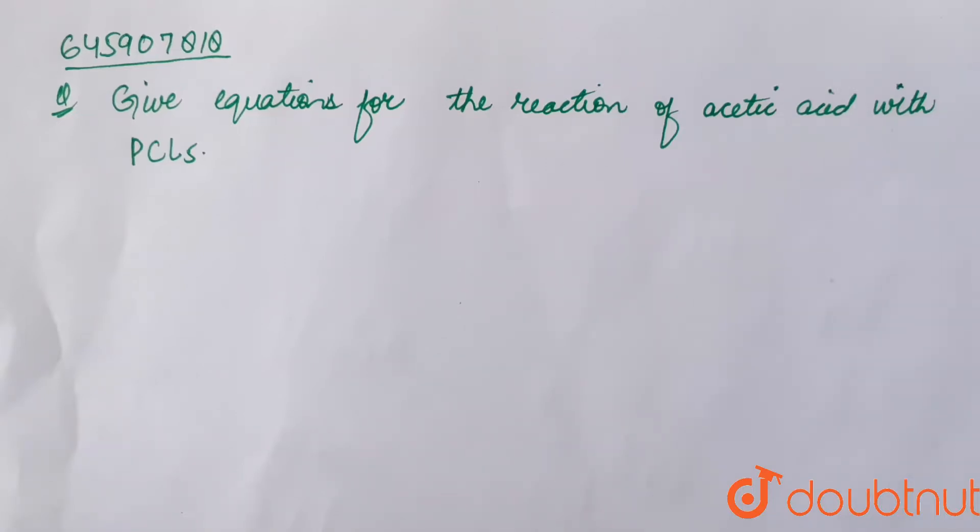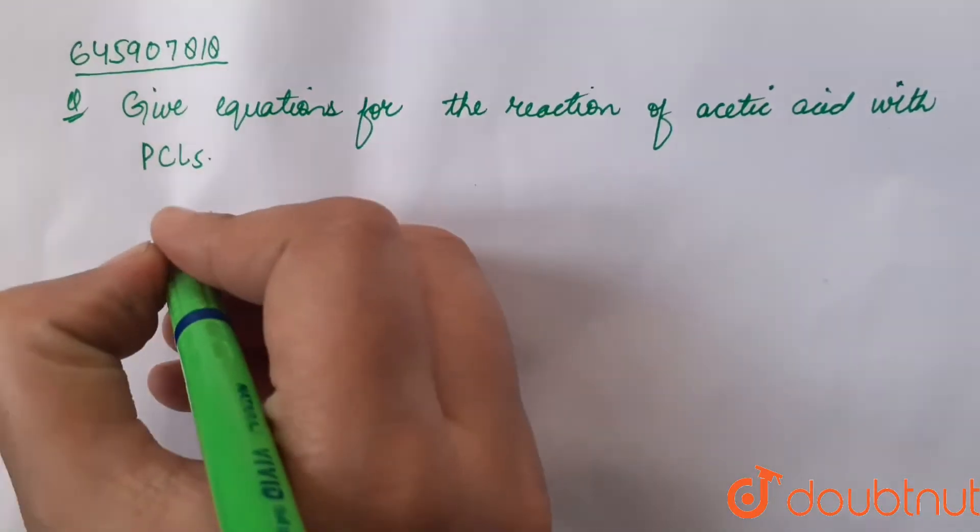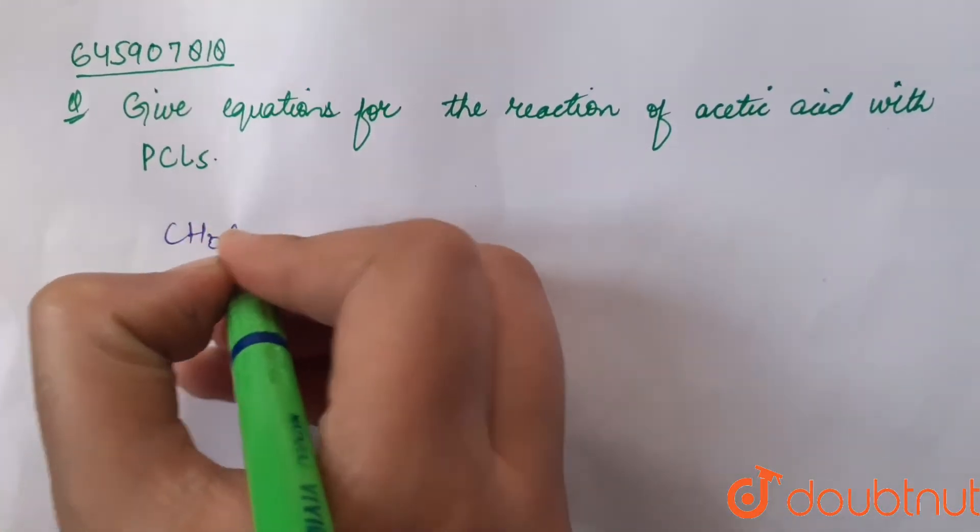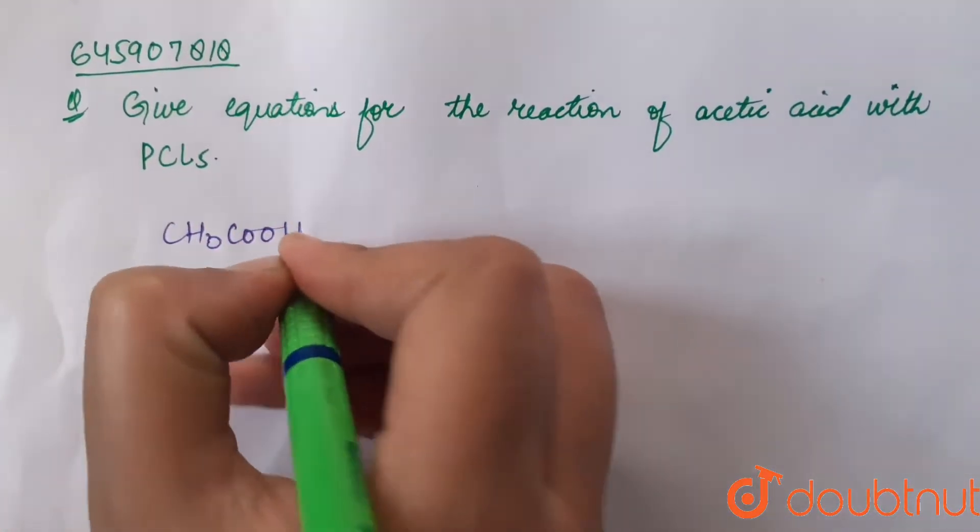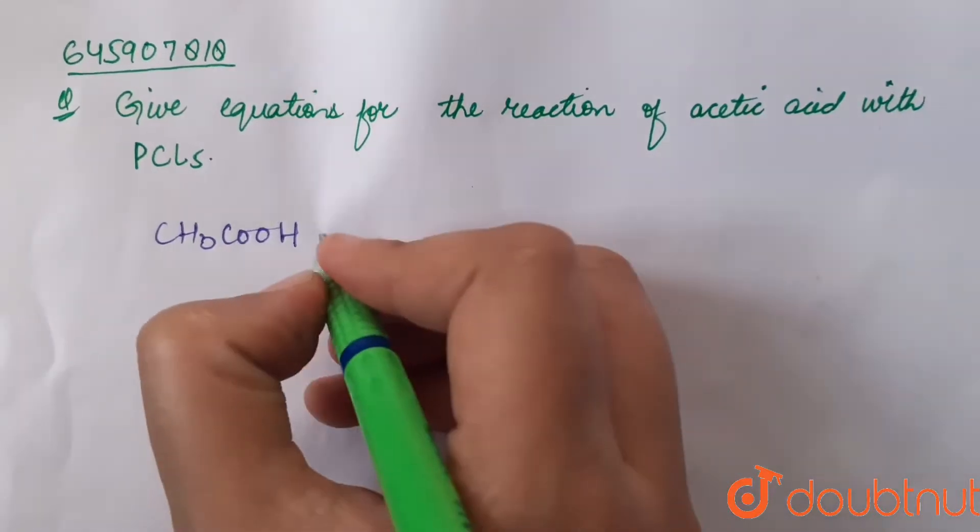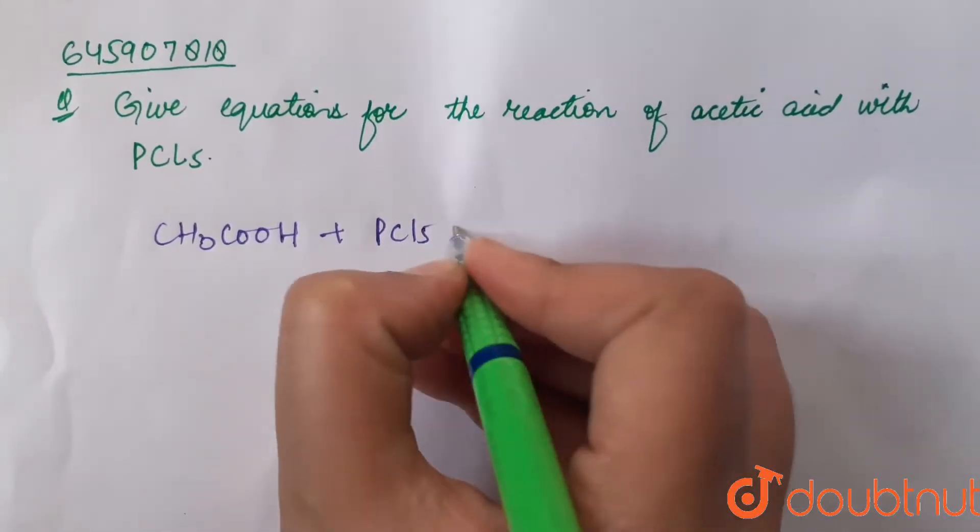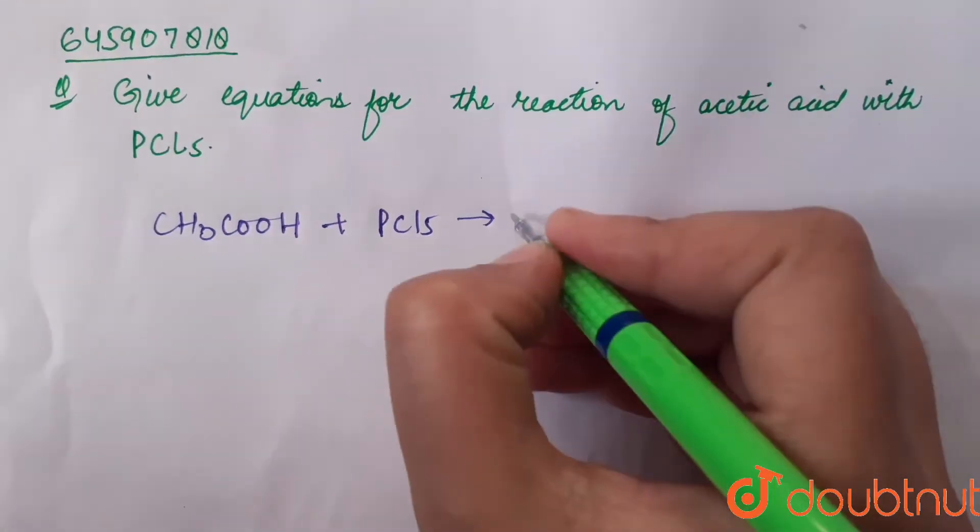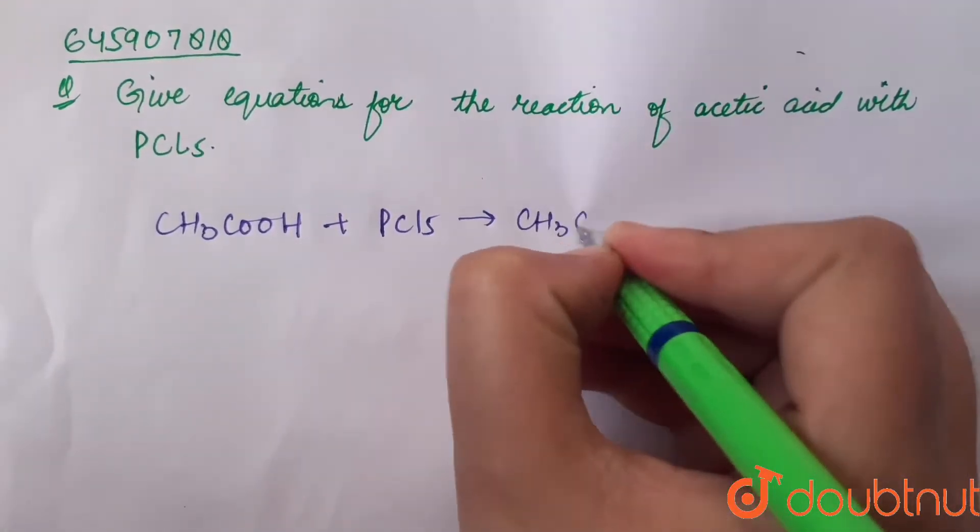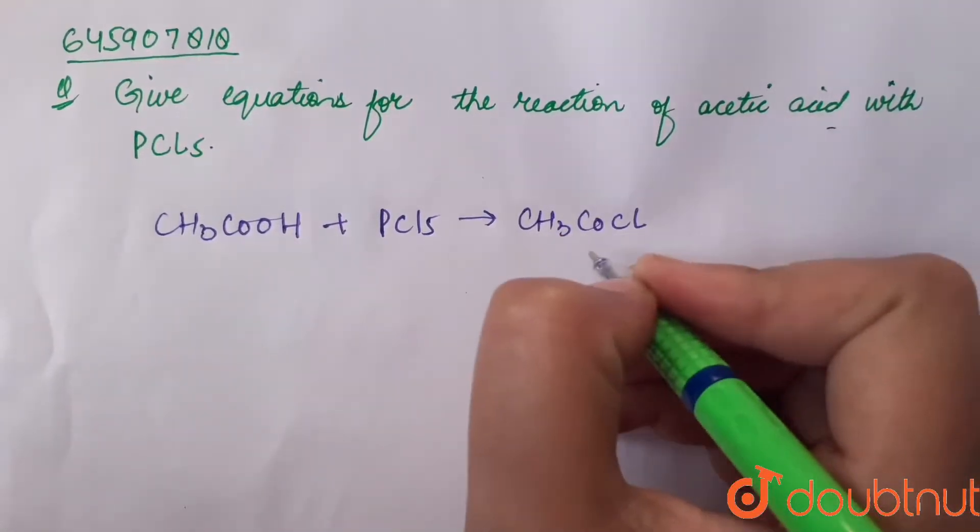Question says give equation for the reaction of acetic acid with PCl5. Acetic acid, that is CH3COOH, reacts with phosphorus pentachloride, that is PCl5. It leads to the formation of CH3COCl, that is acetyl chloride.